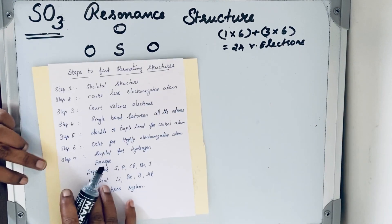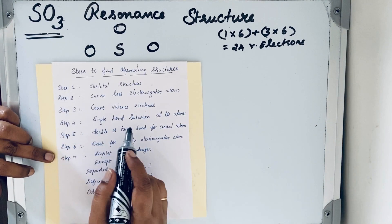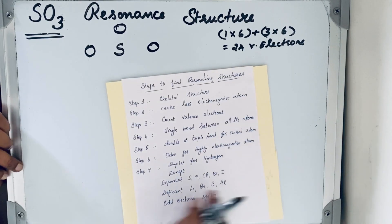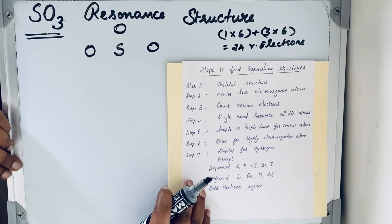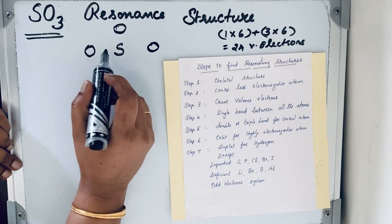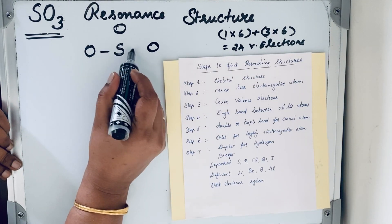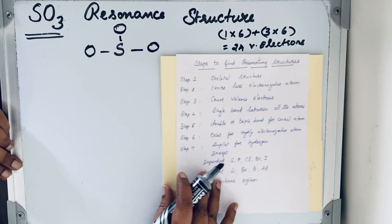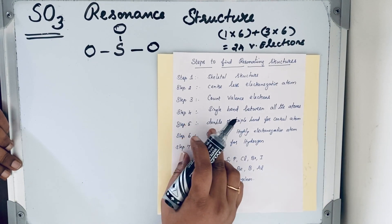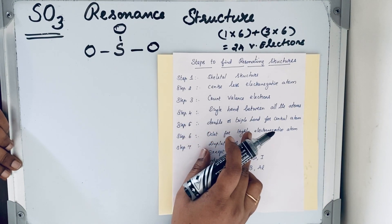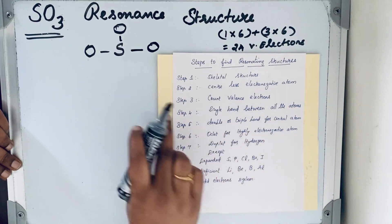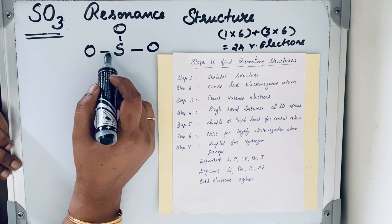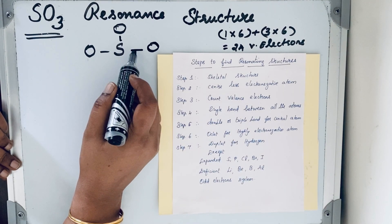Step 4: Draw single bonds between all the atoms. Step 5: Now we go to draw double or triple bonds for the central atom.